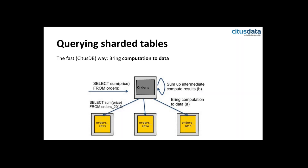The sum of each shard can be computed by each worker separately, so the work is being done on the workers. If a worker has multiple shards, it can also use multiple cores on the same worker. But how do we do this correctly for any given query? How do we make that translation such that we push as much work down to the workers and still get the correct final result?